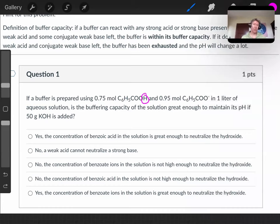To solve this problem, you have to find out how many moles of potassium hydroxide there are from the 50 grams given. That's going to provide you with your moles of hydroxide. Since one mole of potassium hydroxide has one mole of hydroxide ion in it, you can find that out.